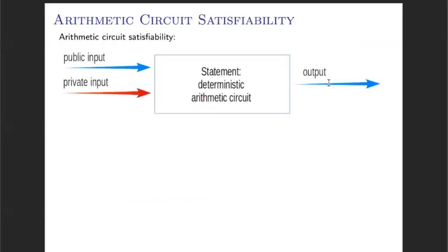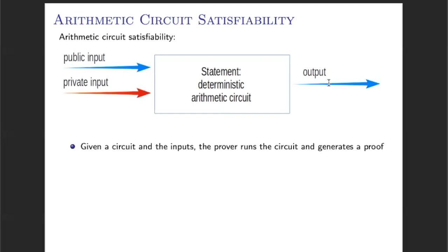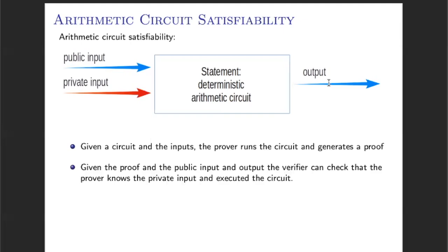Most Zero Knowledge Protocols model the statements being verified as an arithmetic circuit satisfiability problem. In this case, the statement that the prover is going to convince the verifier is that he knows some private inputs and has correctly executed a circuit. In order to generate the proof, what the prover does is first take the public and private inputs and execute the circuit, generating a proof. Then he gives this proof to the verifier, along with the public inputs and the output. And the verifier is able to detect if the prover knows the private inputs and has correctly executed the circuit.